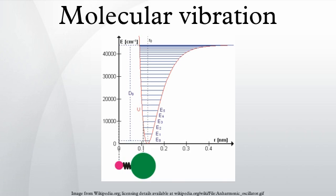A molecular vibration occurs when atoms in a molecule are in periodic motion while the molecule as a whole has constant translational and rotational motion.